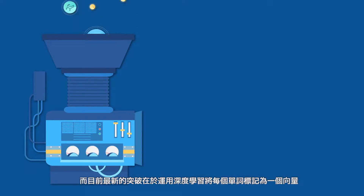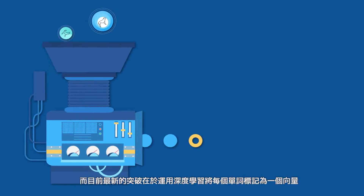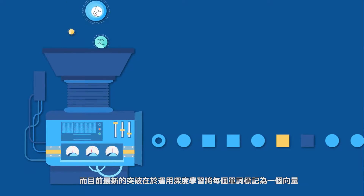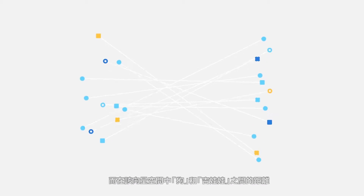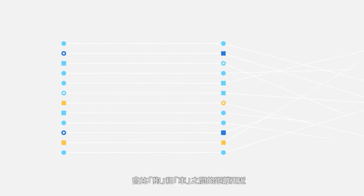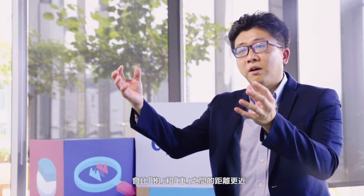The breakthrough here is you can now use deep learning to map each word into a vector. In this vector space, dog and chihuahua actually get closer compared to dog and car, and all the words map to the same vector space. More interestingly, pair-wise relationships of words could also be encoded in this vector space.